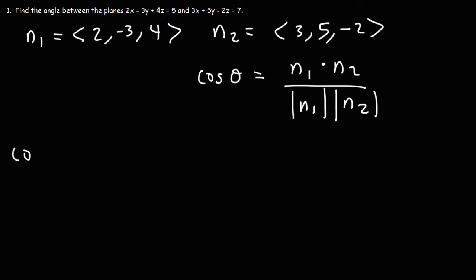So let's begin by finding the dot product of the two vectors. To do that, we need to multiply the x values, the y values, and the z values together. So it's going to be 2 times 3 plus negative 3 times 5 plus 4 times negative 2.